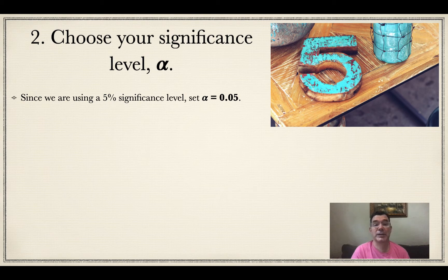Since we're using a 5% significance level in the question, we set alpha to be that percentage as a decimal, which is 0.05. Typically, you're going to be told which significance level to use, so you just need to convert that to a decimal.